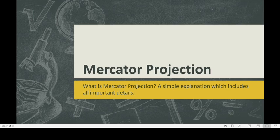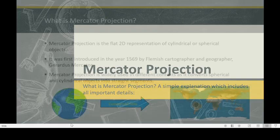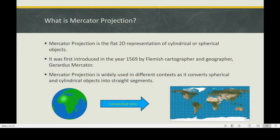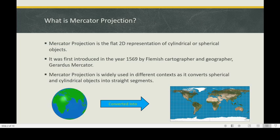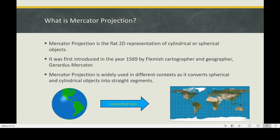What is Mercator projection? Mercator projection is the flat, 2D representation of cylindrical or spherical objects. It was first introduced in the year 1569 by Flemish cartographer and geographer Gerardus Mercator.